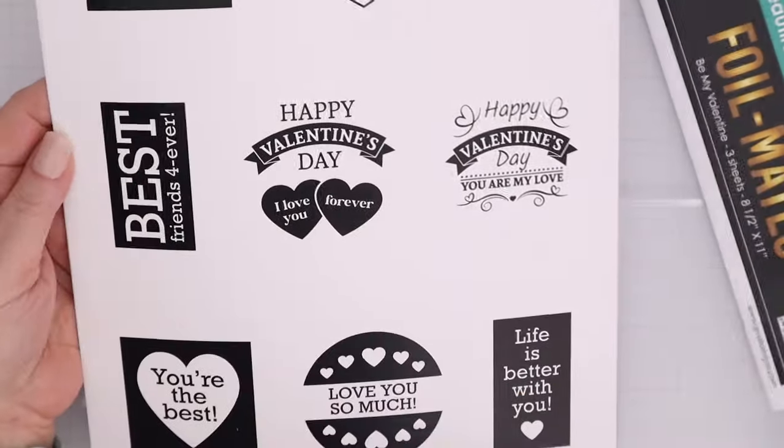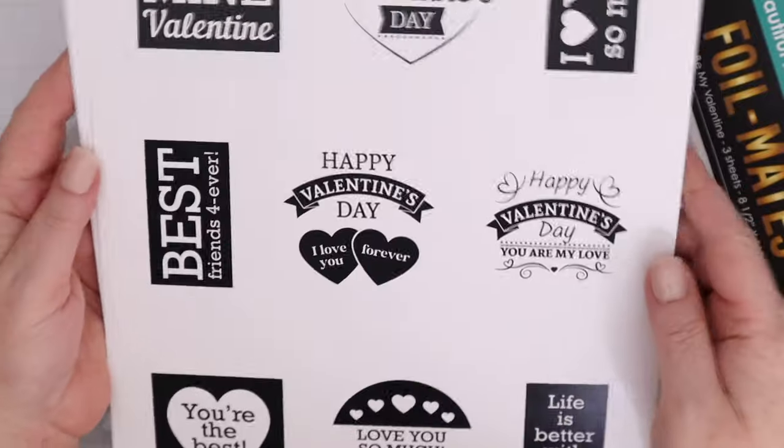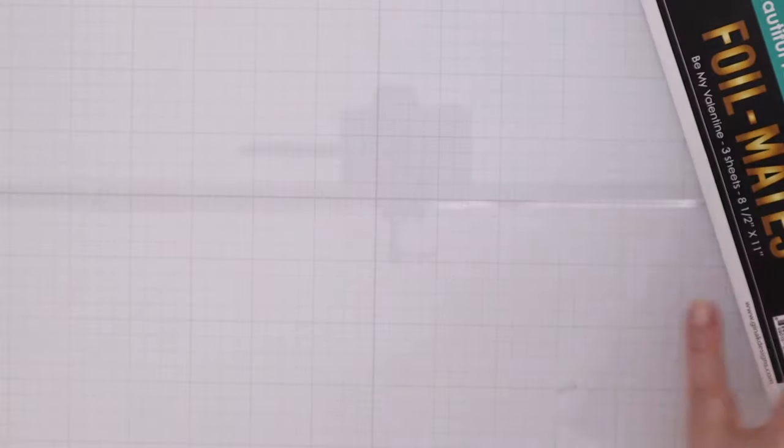Now these are foil mates. These are printed in black toner. These are eight and a half by eleven sheets and you get three of them in the set. They have a bunch of sentiments that can be used from Valentine's Day and beyond.